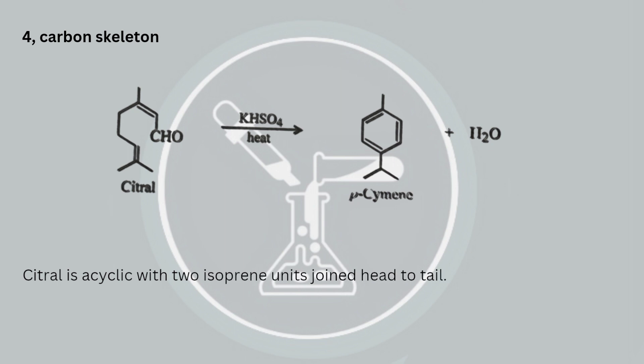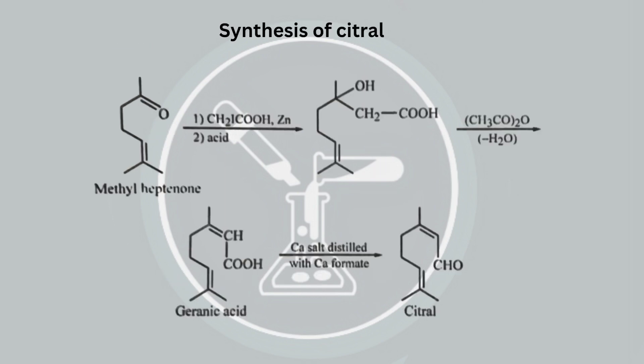This structure can be confirmed by the synthesis of citral. To begin with, geranic acid is prepared from methyl heptanone and iodoacetic acid. It is then converted to citral by distilling a mixture of the calcium salts of geranic acid and formic acid.